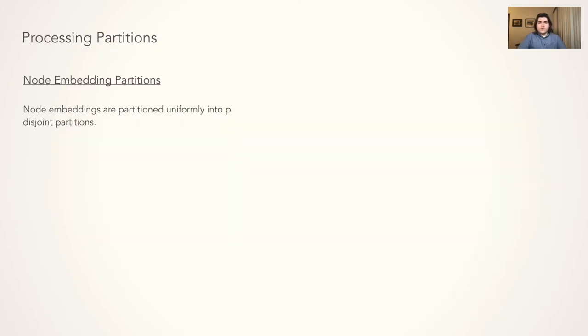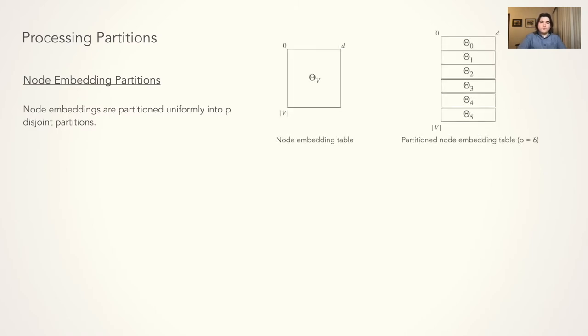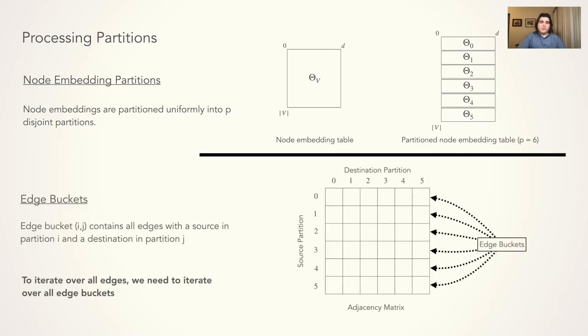Because we store our embeddings on disk and we need efficient or regular access to the embeddings, we must partition the embeddings and load them sequentially into CPU memory, where once they're in CPU memory, the embeddings can then be efficiently accessed within the partitions. We correspondingly group the edges into P squared edge buckets, where edge bucket I,J contains all edges which have a source in partition I and a destination in partition J.